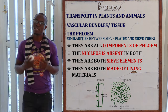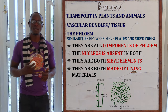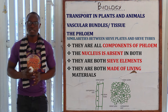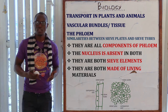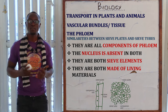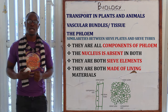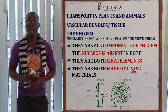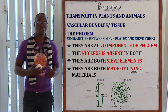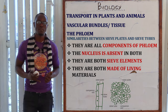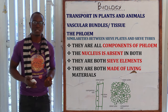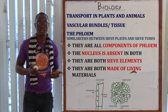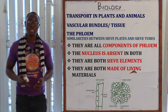Similarities between sieve cells and sieve tubes: both are components of the phloem, just as vessels and tracheids are both components of the xylem. Both do not have a nucleus. Both are sieve elements. Both are living cells — unlike xylem, which is made of dead cells at maturity, phloem cells must be living. Both are involved in translocation. Both have a thin primary cell wall and a dense granular protoplasm. Both form the primary and secondary phloem in the plant.